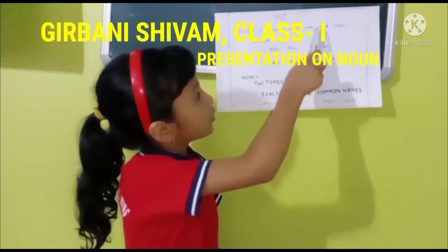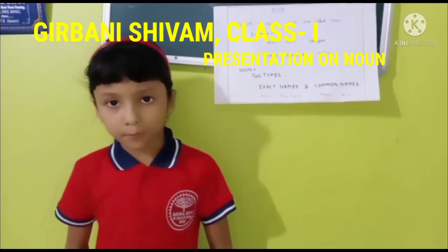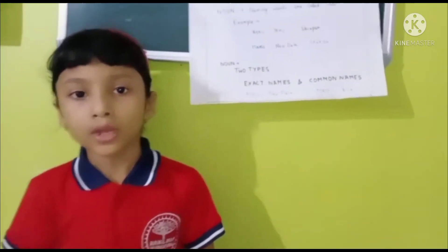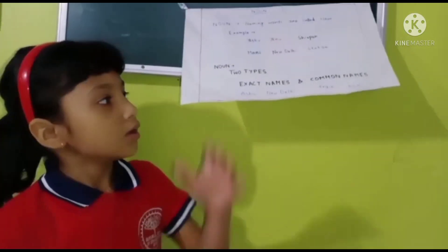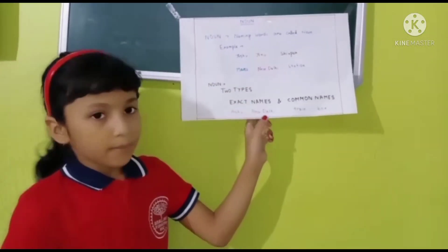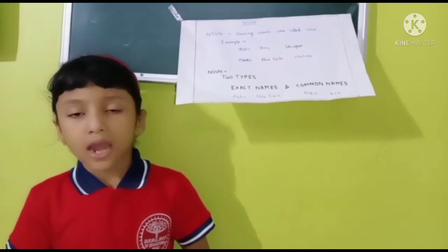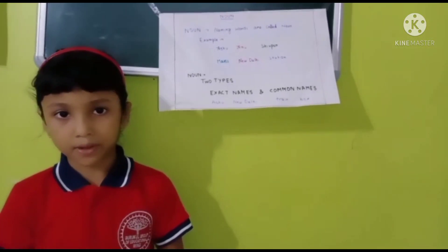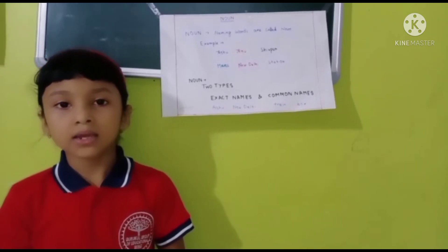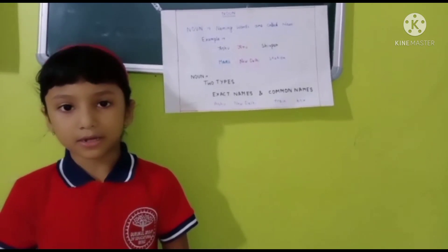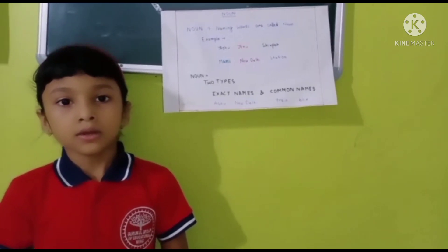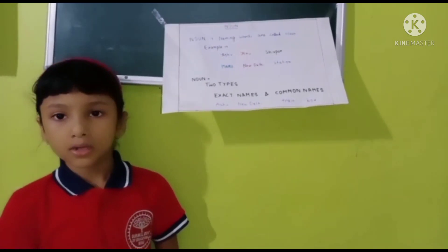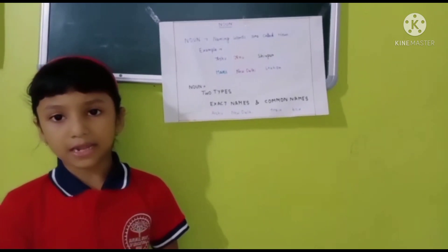Naming words are called noun. For example, Ashu, Anu, Manu. Naming words are of two types: exact name and common name. Exact name begins with a capital letter. For example, Manu, New Delhi.